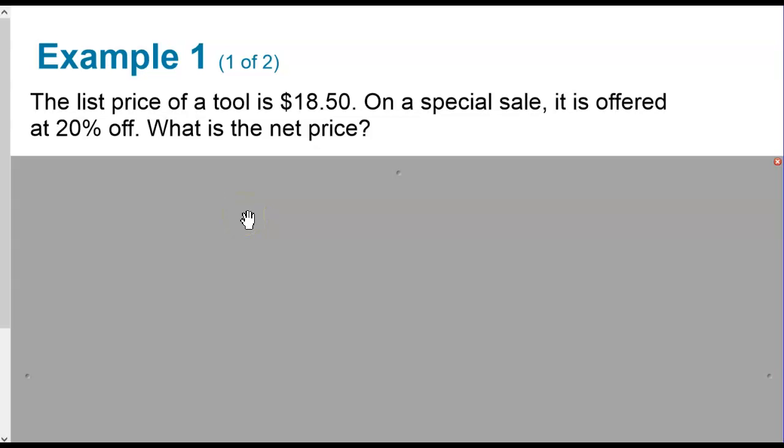Let's go ahead and look at this. The list price of a tool is $18.50, and it's on a special sale, and it's offered at 20% off. So what is the net price? Go ahead and pause the video. You might be able to do this one on your own. Try to work it out. Go back to, if you need to, remembering that of equals multiplication and is equals, so you can see those in here, and that might help you a little bit with this.